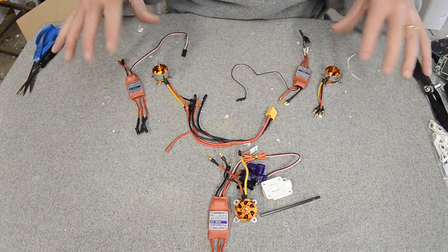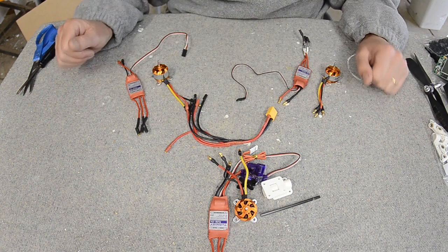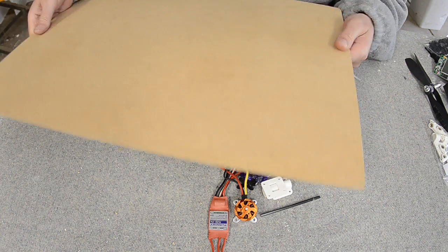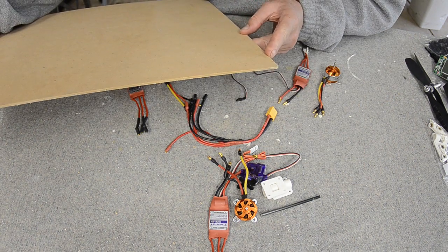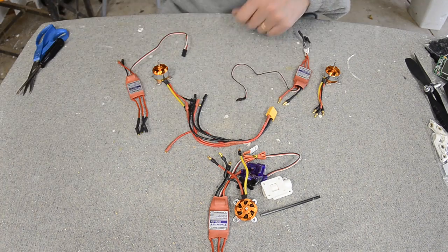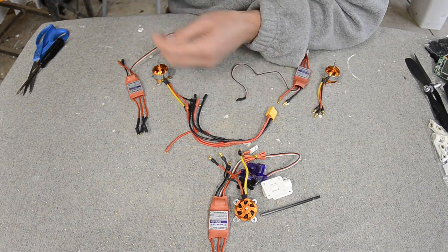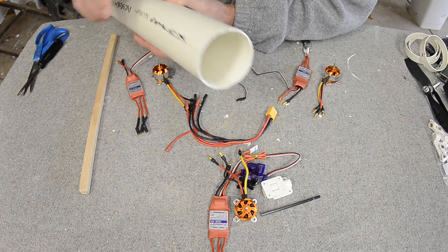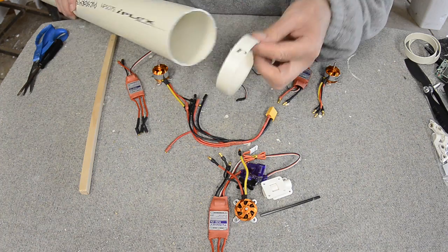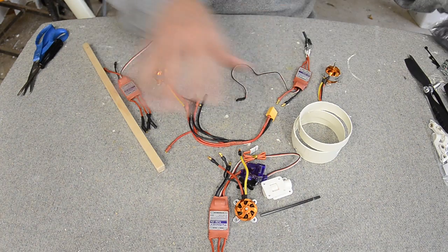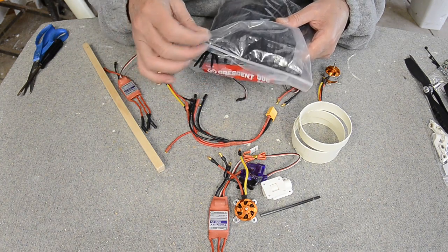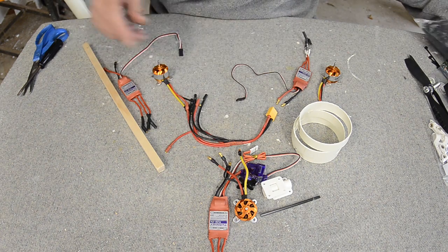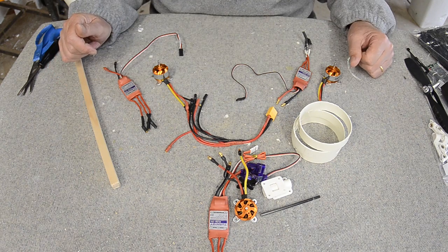The rest of the tricopter is basically just a skeleton to hold all of this stuff together. For the body I'm using the cheapest material available which is 3mm MDF medium density fibre board. For the arms I'm using 12mm square pine, for the landing gear I'm using this 70mm PVC pipe and just cutting rings from it. All of this is just held together with zip ties so that it's easy to put together. If you have a crash the zip ties will break rather than bending motor shafts or breaking frames, hopefully that's the theory anyway.